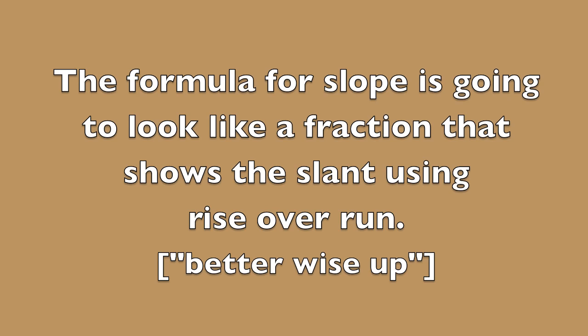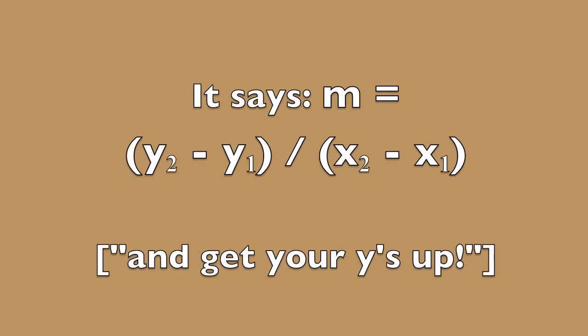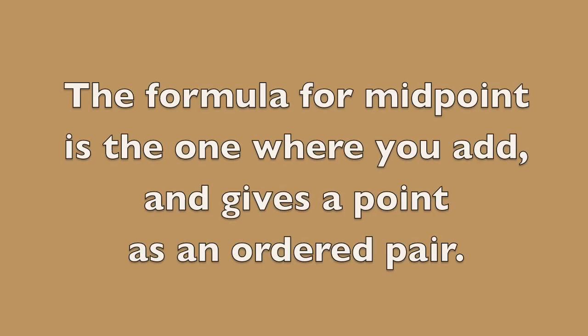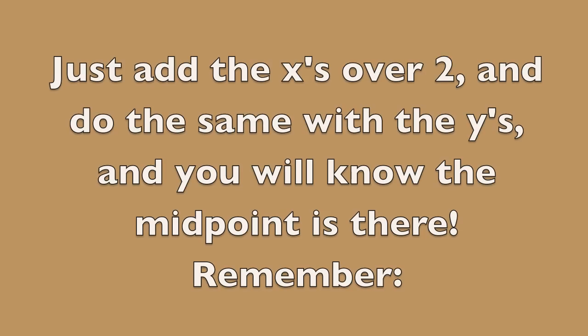The formula for slope is going to look like a fraction that shows the slant using rise over run. It says m equals y2 minus y1 over x2 minus x1. The formula for midpoint is the one where you add and gives a point as an ordered pair — just add the x's over 2 and do the same with the y's, and you will know the midpoint is there.